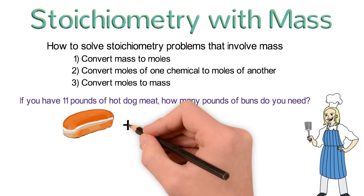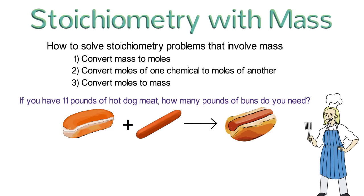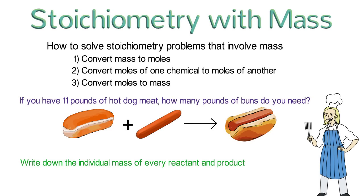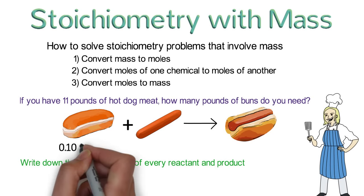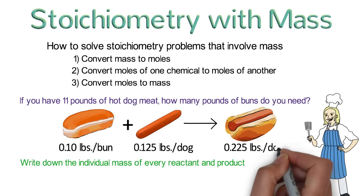One bun and one piece of hot dog meat are needed to make one hot dog. Now in order to figure out how many buns you want to buy, you need to first calculate the number of hot dogs that you have. And in order to do that, you need to know how much one hot dog weighs. It's best to write down the individual mass of every reactant and product. One bun weighs 0.1 pounds, one dog weighs 0.125 pounds, and a hot dog with bun weighs 0.225 pounds.